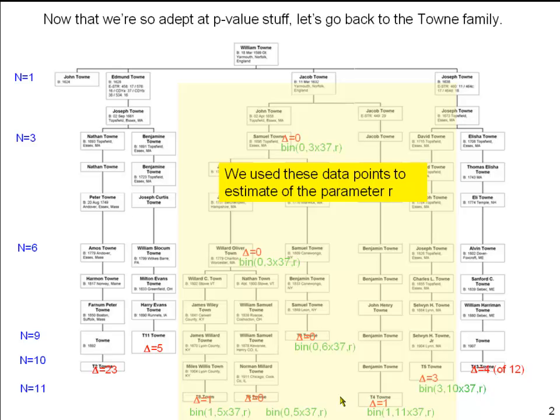Now that we have p-values, we can ask different kinds of questions. We can ask, is T11 here a descendant of William Towne, or is he the result of what's euphemistically called a non-paternal event? A non-paternal event means that somewhere along this line there's a son who is not really the biological son of the father shown on the diagram. I'll leave it to your imagination to understand how that might have happened.